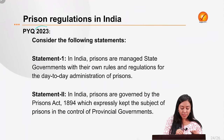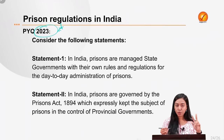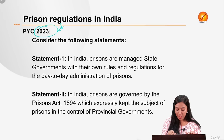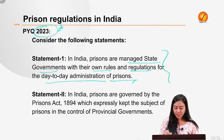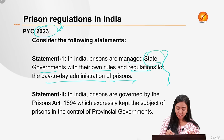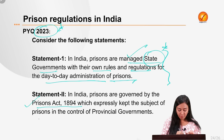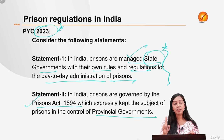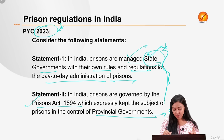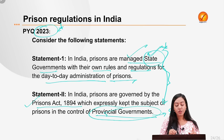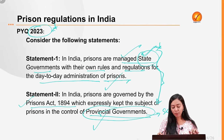Let's solve a 2023 PYQ together. Statement 1: In India, prisons are managed by state governments with their own rules and regulations for day-to-day administration. This is correct — prisons are a state subject. Statement 2: In India, prisons are governed by the Prisons Act 1894, which expressly kept the subject of prisons under provincial government control — corresponding to today's state government. This is also correct. Therefore both statements are correct.